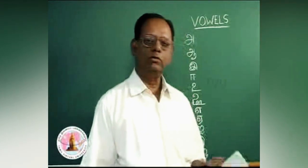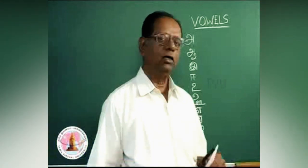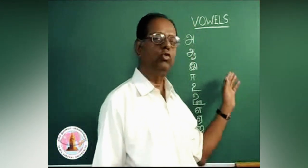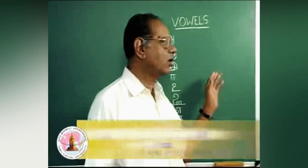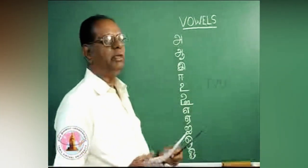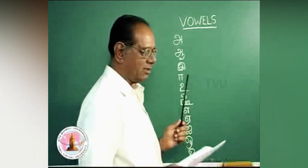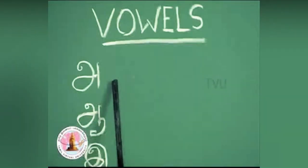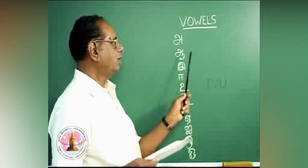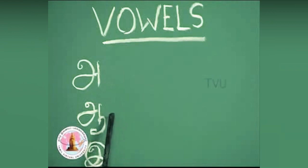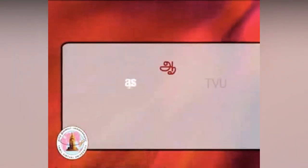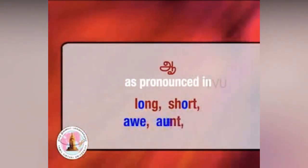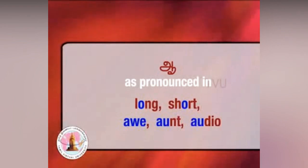Friends, welcome to the second class. We saw that the Tamil alphabet is categorized into two groups — one is called vowel and the other is consonant. I would like to repeat the example given in the last class. This is A, a back vowel. Then we go to Ā. For this, I would like to make use of two English words: 'long' — long itself is long and you have the Ā sound there — and 'sort,' S-O-R-T, sort.